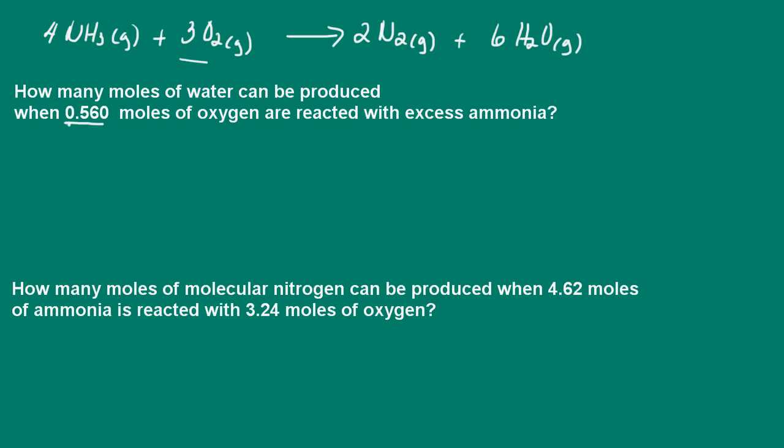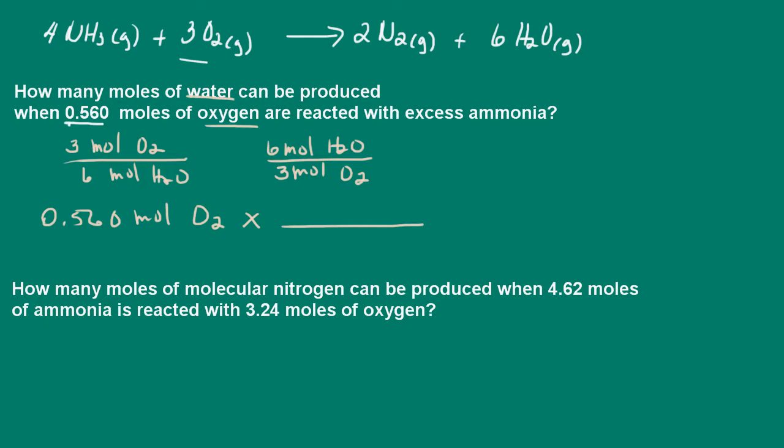So let's take a look here at how to do this problem. First, this is simple stoichiometry. So we want to relate oxygen to water. So let's write out our mole ratios. So we have 3 moles of oxygen for 6 moles of water. And I can also write it the other way, 6 moles of water for 3 moles of oxygen. So I'm given 0.56 moles of oxygen. And I want to relate oxygen to the number of moles of water. So I'm going to use conversion factor number 2 here. So we have 6 moles of water for 3 moles of oxygen.